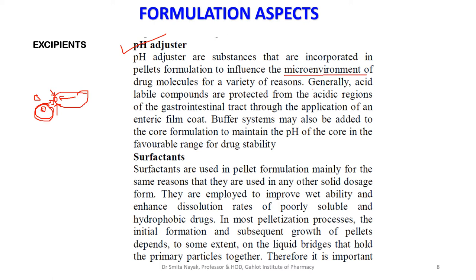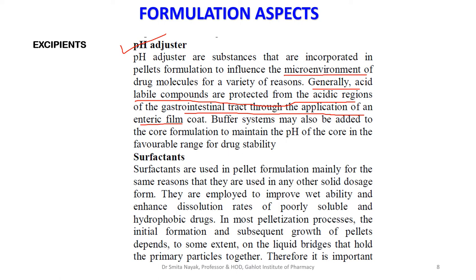Generally, acid-labile compounds are protected from the acidic regions of the GI tract through application of an enteric film coat. We are aware of enteric film coating of tablets with polymers such as cellulose acetate phthalate, which does not release the drug in acidic fluid but releases it in alkaline fluid. Similarly here, the pH adjuster — the enteric coat applied onto the pellet — does not allow drug release in the acidic environment, but allows the drug to be released in the small intestine.